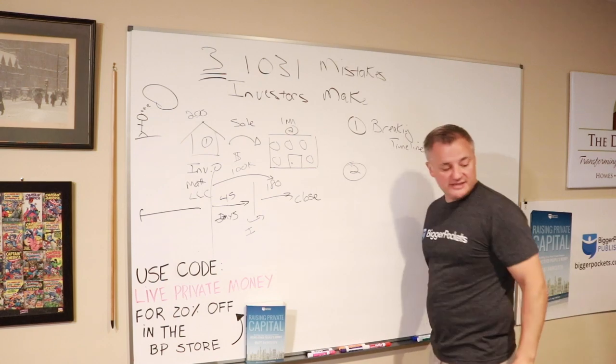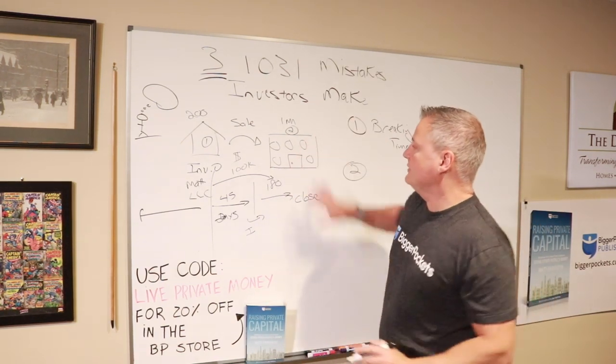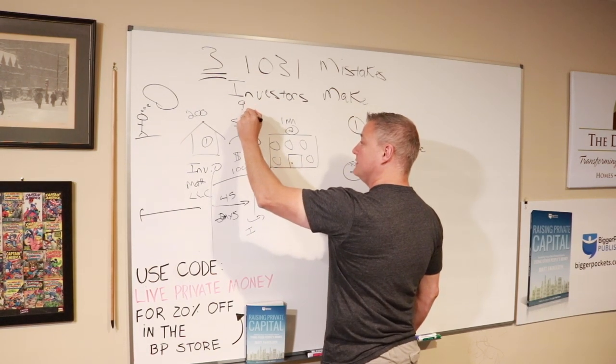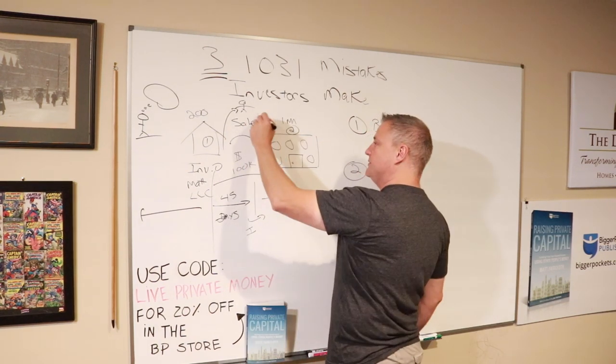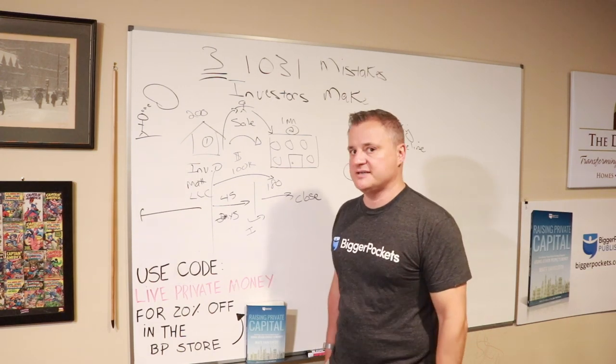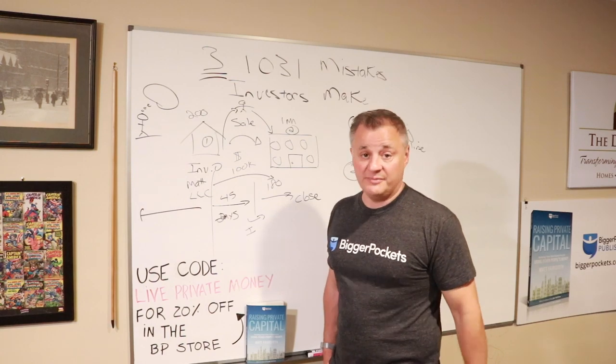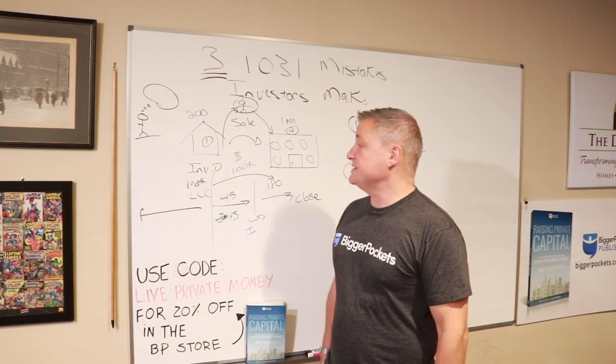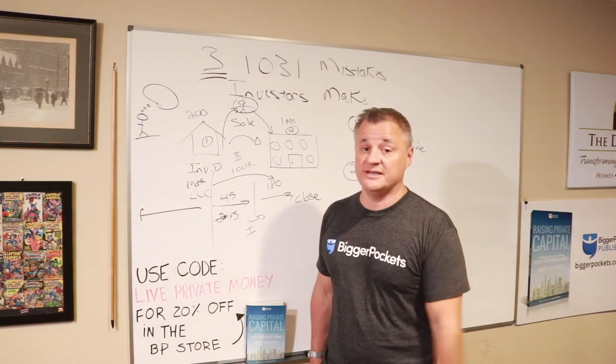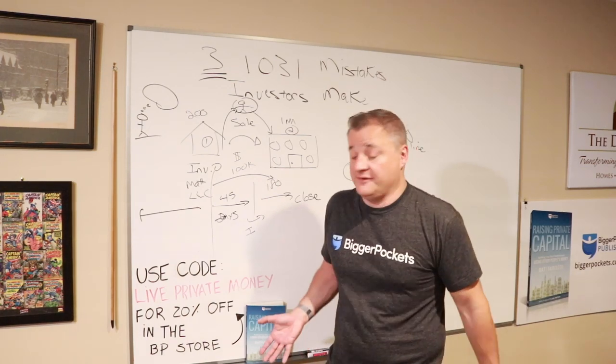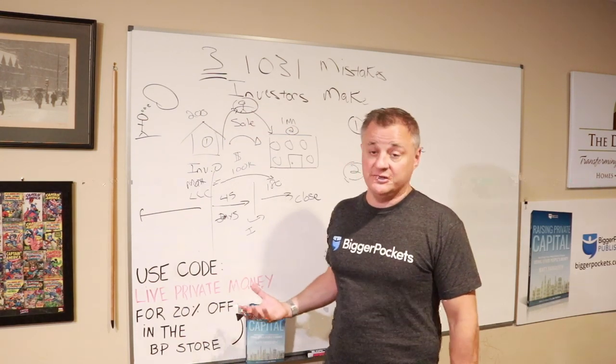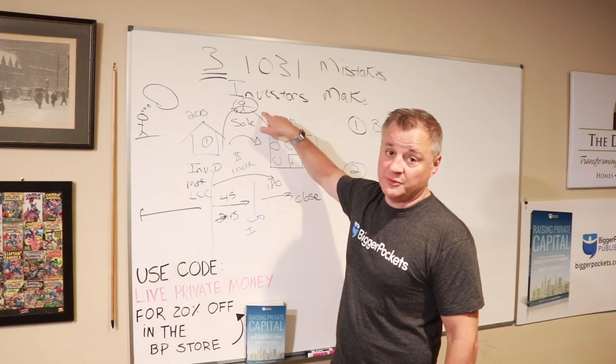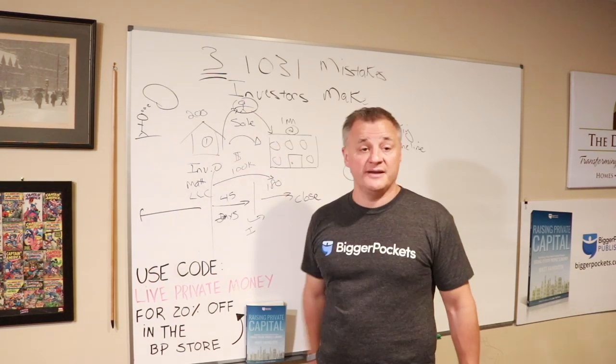Mistake number two that people make on 1031 exchanges is that they don't use the right custodian. The money gets held by a third party company. If you use the wrong custodian that doesn't understand the process or doesn't have a good reputation, if you choose the wrong custodian, unfortunately in the United States the custodians are not a well-regulated industry. It doesn't take much to become a custodian of people's 1031 exchange capital. It's a very low bar.